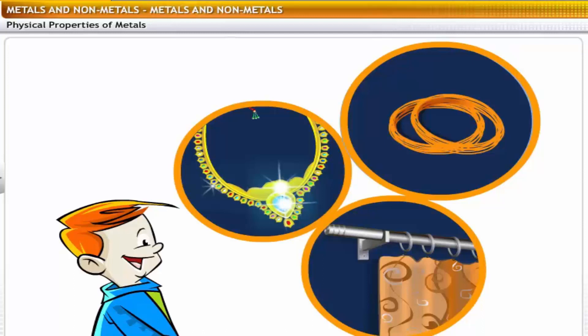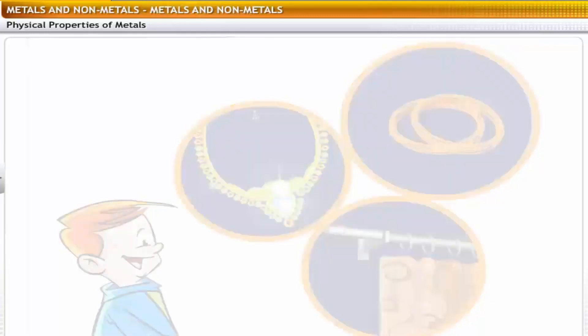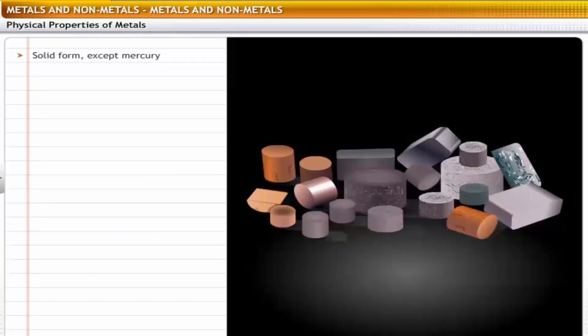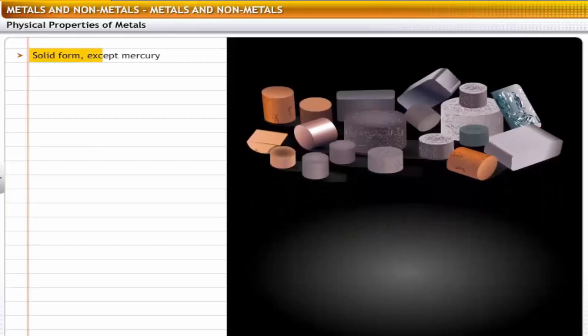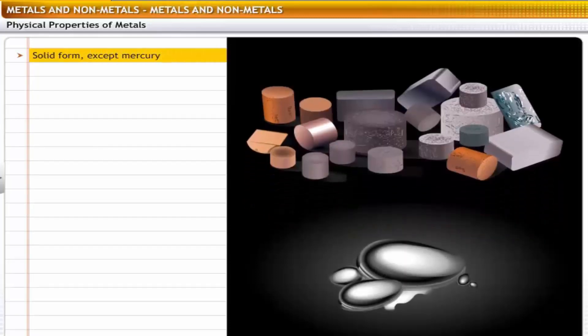Metals are used to make these objects because of some specific physical properties. All metals are solids at room temperature, except mercury which is a liquid.